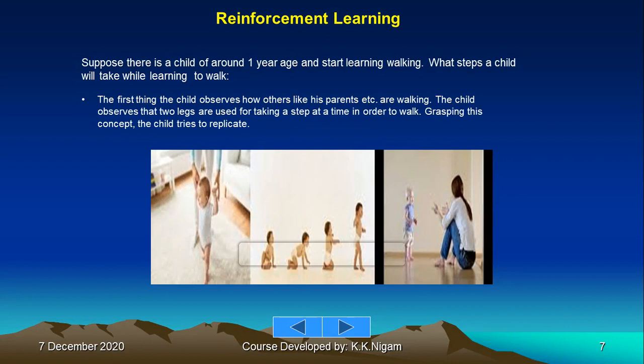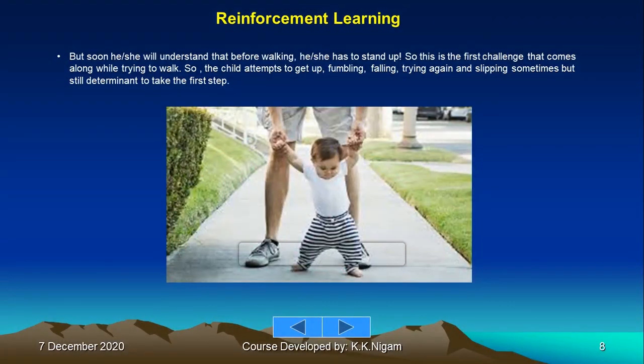Suppose there is a child of around one year of age who starts learning to walk. The child first observes how others, like parents, are walking. The child observes that two legs are used for taking a step at a time. Grasping this concept, the child tries to replicate it but soon understands that before walking, he or she needs to stand up.